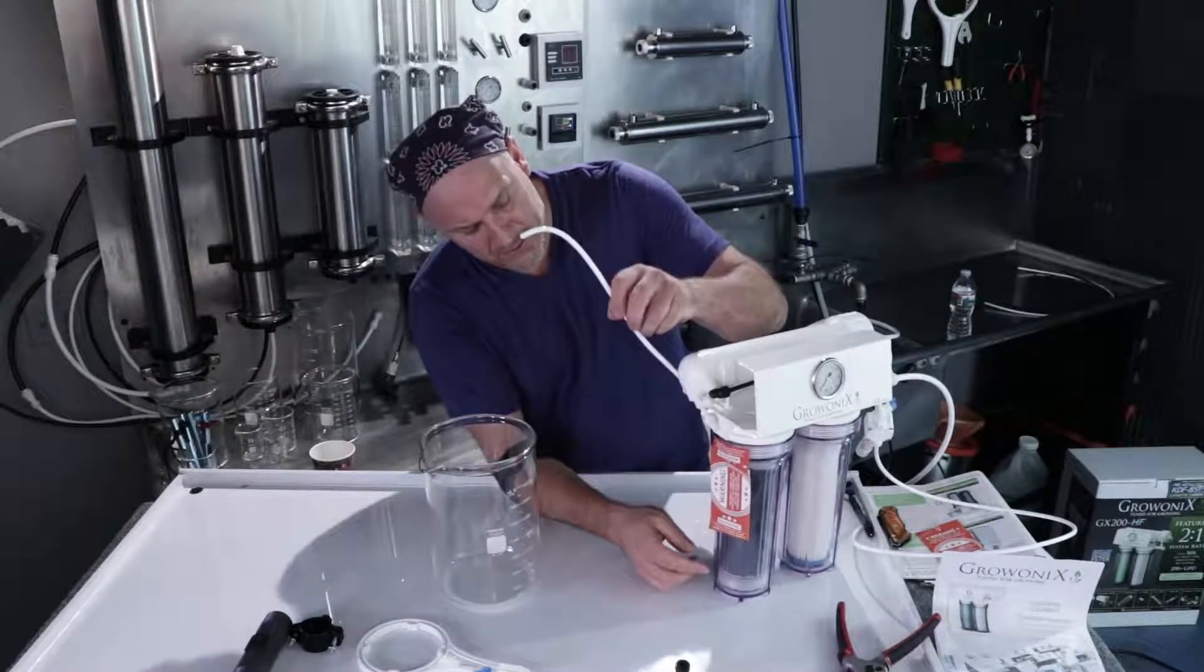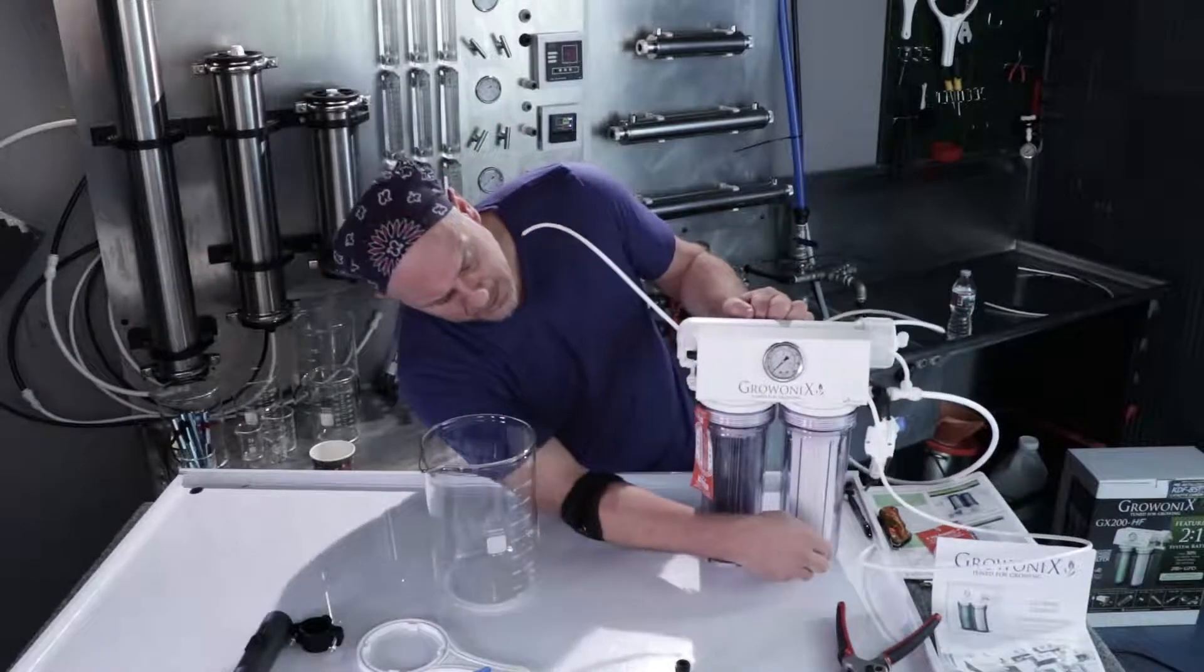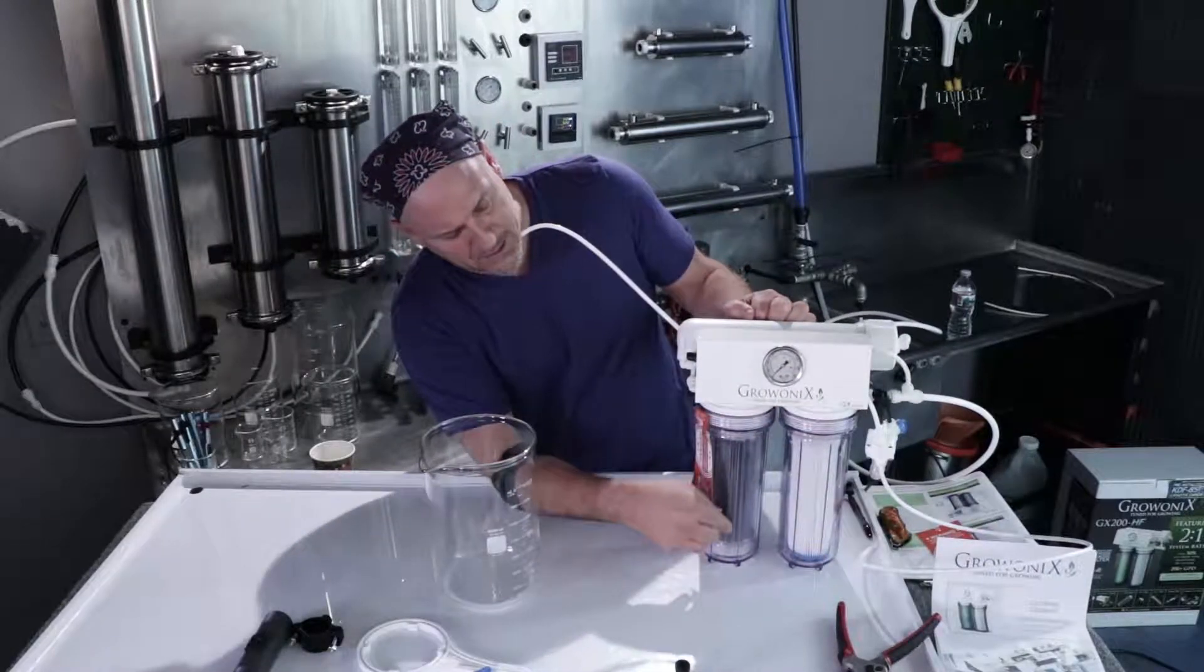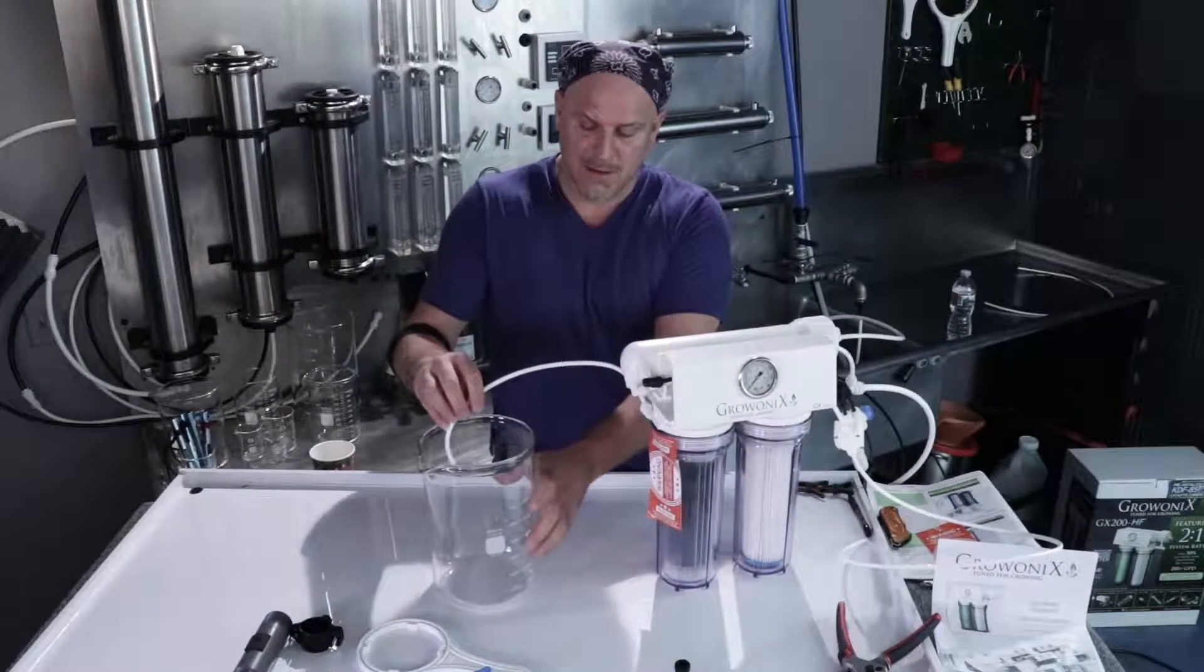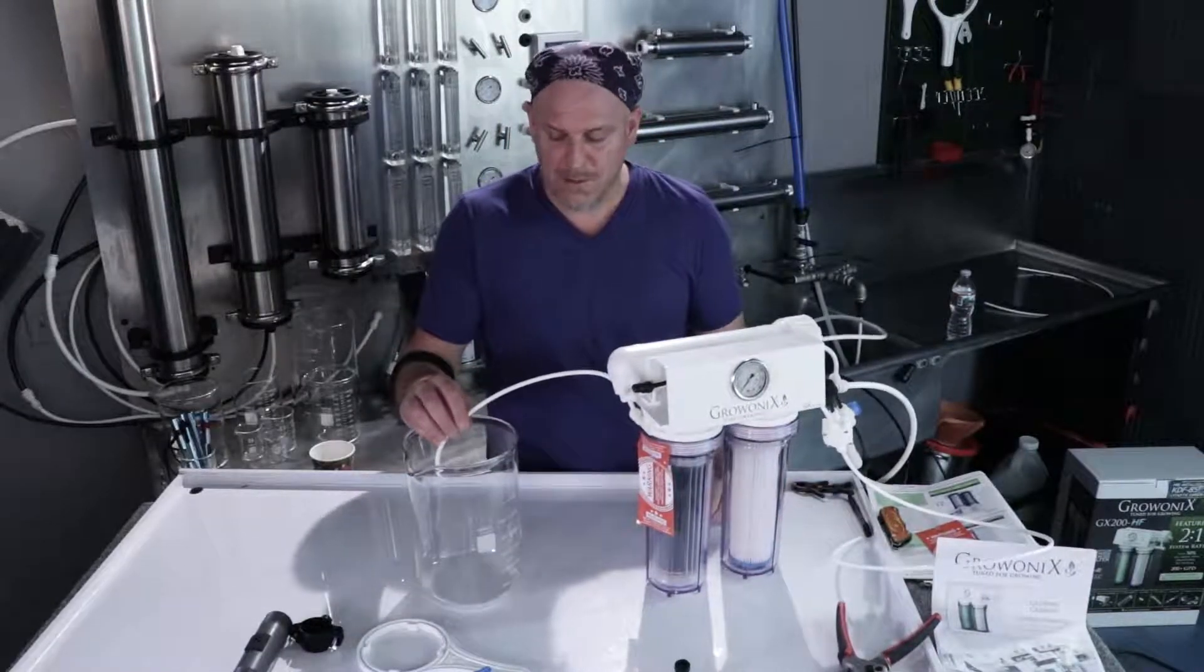So here we are. Here's the tube. The flow is going to go into the sediment filter, up through the carbon filter, and out this tube into this beaker, and we're going to show you what the carbon looks like coming out.